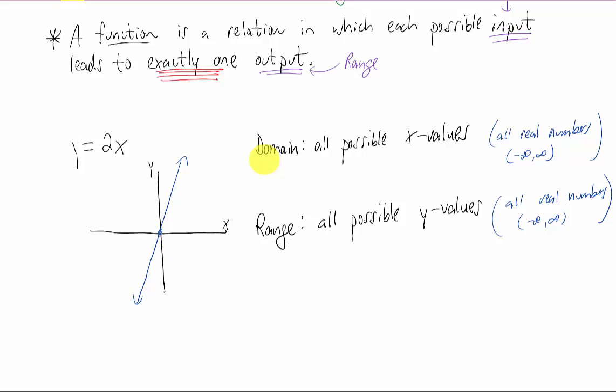The important thing to remember is that we always consider the domain in this class to be all the possible x values, or horizontal axis values, and we always think of the range to be all possible y values, or vertical axis values.